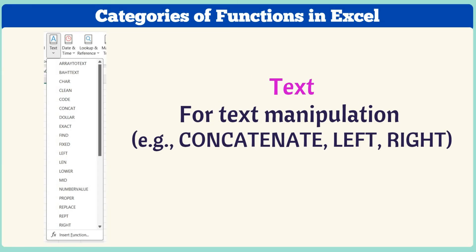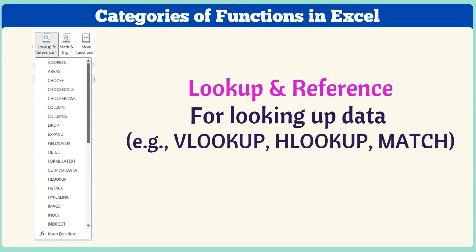The Text category is for text manipulation — examples are CONCATENATE, LEFT, and RIGHT. Then we have the Lookup and Reference category for looking up data — examples are VLOOKUP, HLOOKUP, and MATCH.